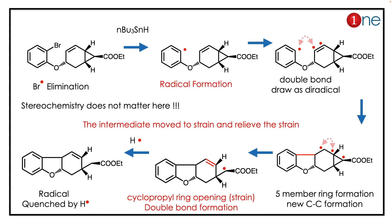The reaction is based on functional group and intermediate. You are using tributyltin hydride — it is a radical initiator. It basically removes the carbon-halogen bond. So you have halogen abstraction and a bromine radical is formed. The radical is active.